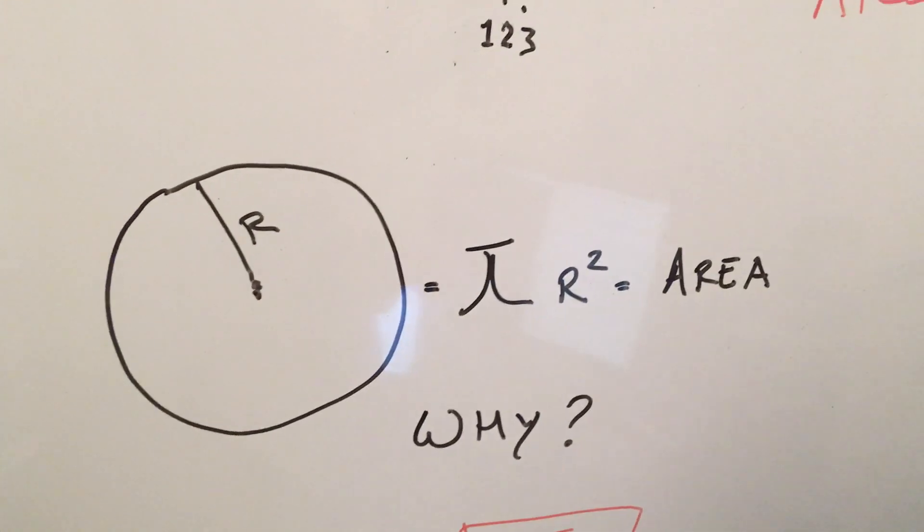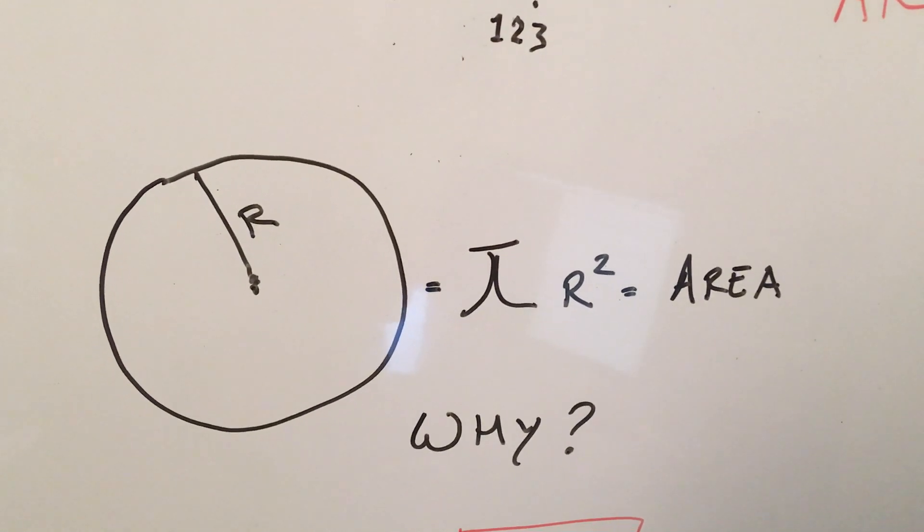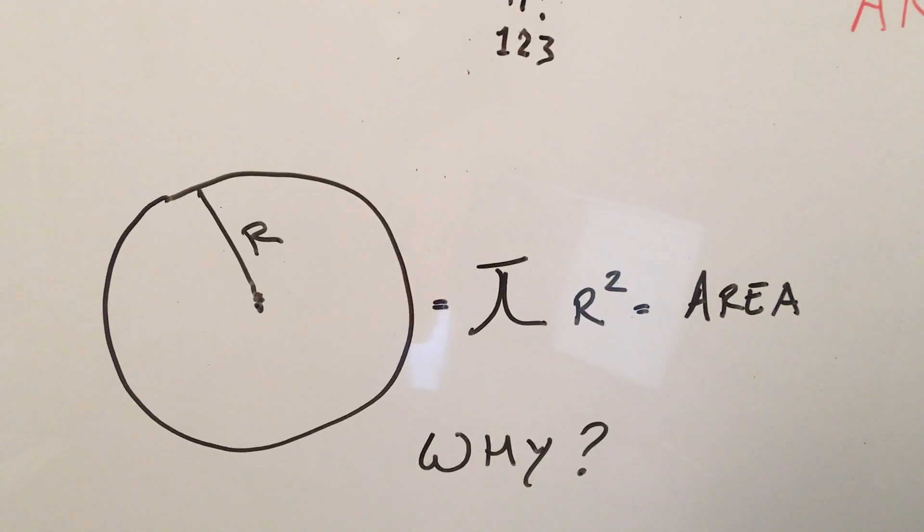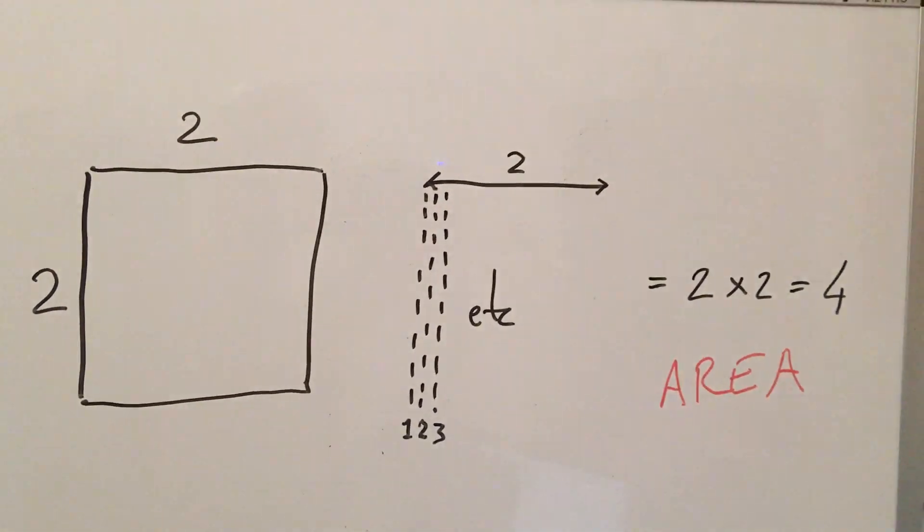So now, now that you understand that concept, if you do understand it, you should be able to figure out why the area of a circle is pi r squared. Do you know why? Think about it for a second.